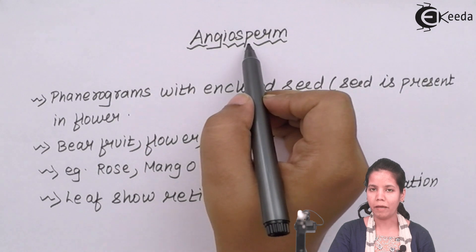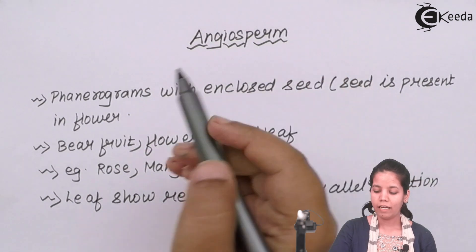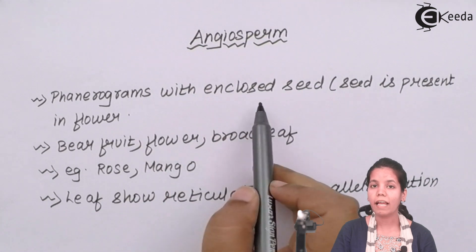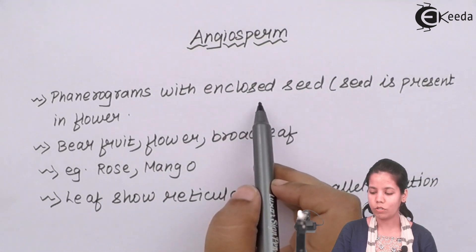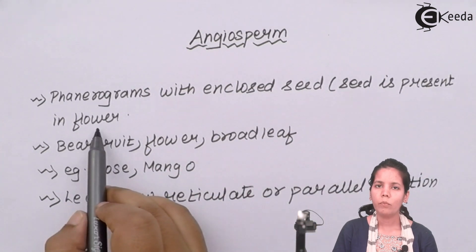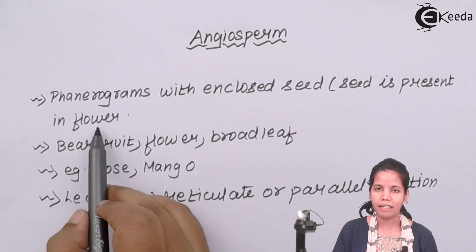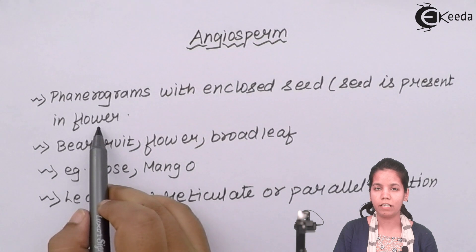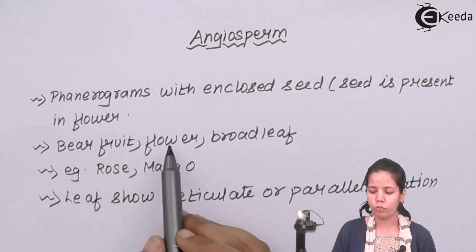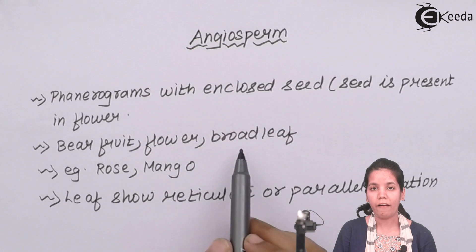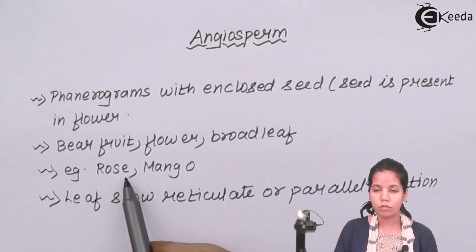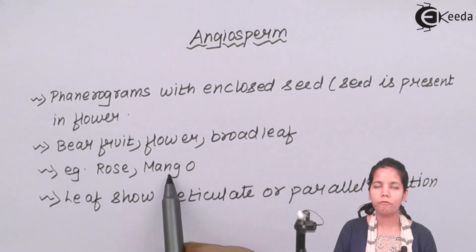Angiosperms are the fruit and flower bearing plants. They are called phanerograms but with enclosed seeds. Enclosed seed means the seed is present inside the flower, and after fertilization the seed is formed. These plants are divided into fruit, flower, have broad leaves, roots, and stems. An example is the rose plant or your fully grown mango plant.